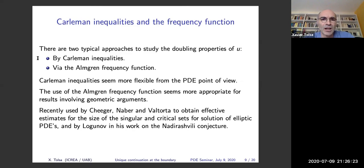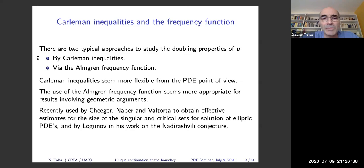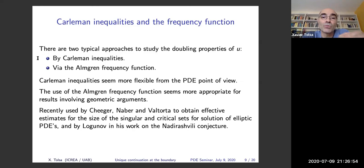The study of properties of the Almgren frequency function has been very important in recent remarkable results by Cheeger, Naber and Valtorta to obtain effective estimates of the size of singular and critical sets of solutions of elliptic PDEs, and also in recent work of Logunov in connection with the Yau conjecture.